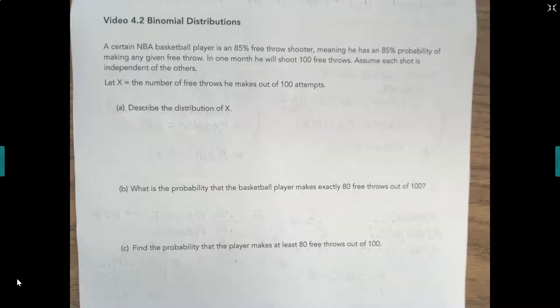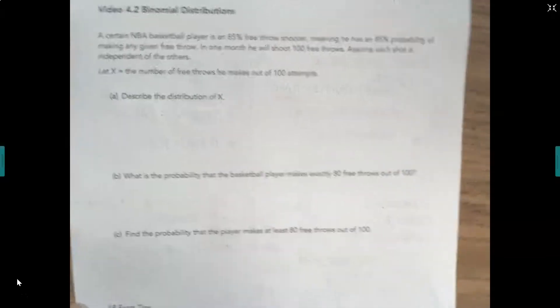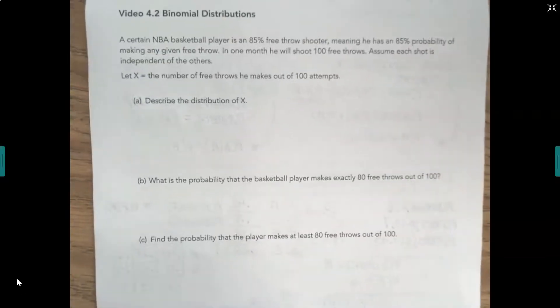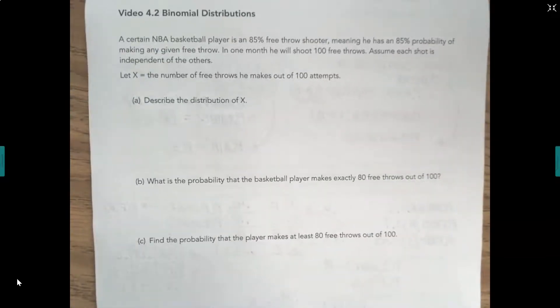It asks us to describe the distribution of X. So we're being asked to describe a distribution, but not just any distribution, the distribution of X. Describing a distribution, you've got to think back to SOCS: shape, outlier, center, spread. We're talking about free throw shots of a single person, 85%. There's not going to be outliers, so we want to look at shape, center, spread.